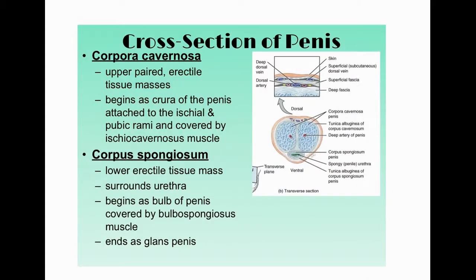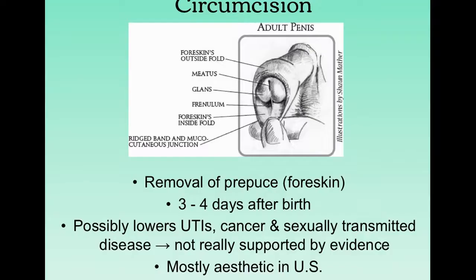In cross-section, the penis contains the corpora cavernosa — two masses of erectile tissue — located superiorly, and the corpus spongiosum, also erectile tissue, located inferiorly and surrounding the urethra, the duct through which both semen and urine travel.